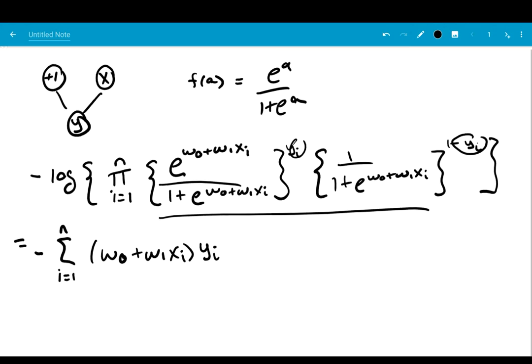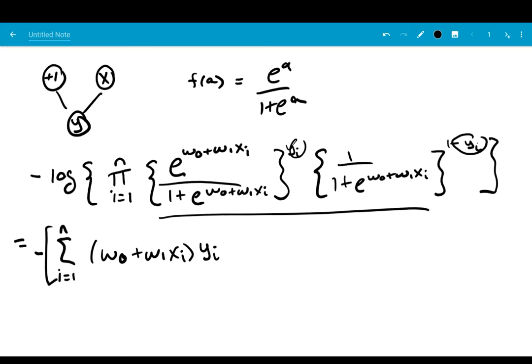And then we get, let's just make sure we know that that negative applies to everything, and then the next part, we get a minus log 1 plus e to the w naught plus w1 xi.